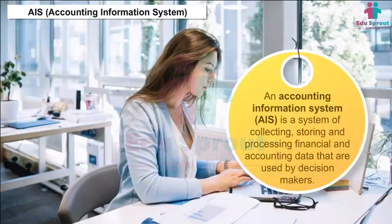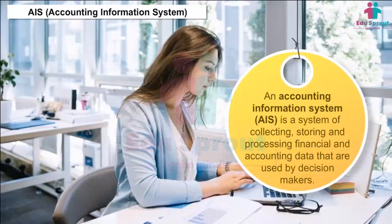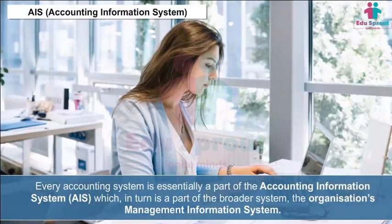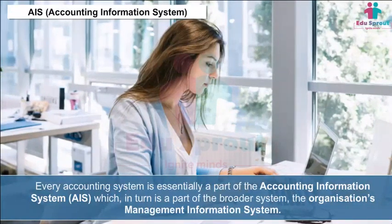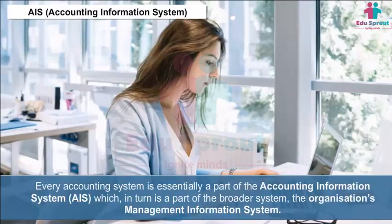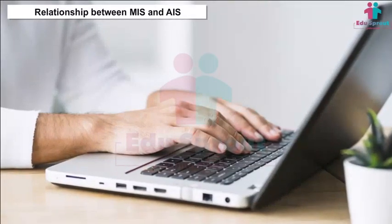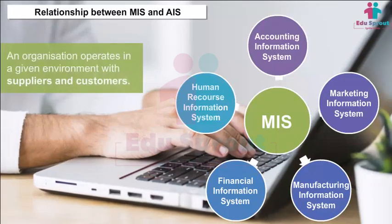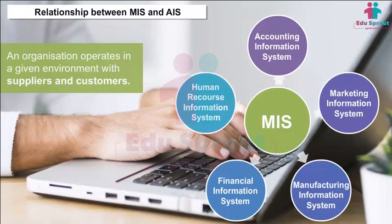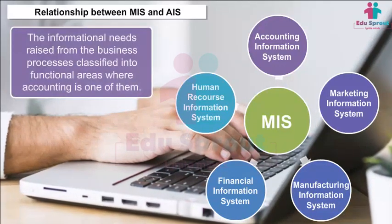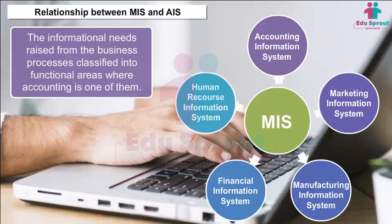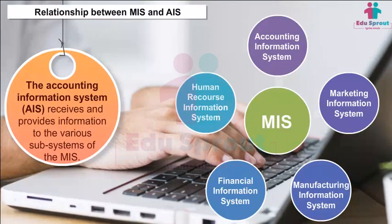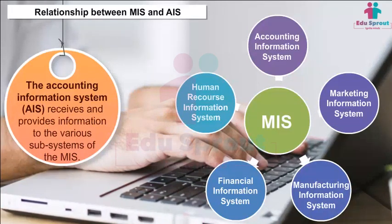AIS — Accounting Information System: An AIS is a system of collecting, storing, and processing financial and accounting data used by decision makers. Every accounting system is essentially a part of the AIS, which in turn is a part of the organization's broader Management Information System. The diagram shows the five widely recognized functional areas of management; the AIS receives and provides information to the various subsystems of the MIS.